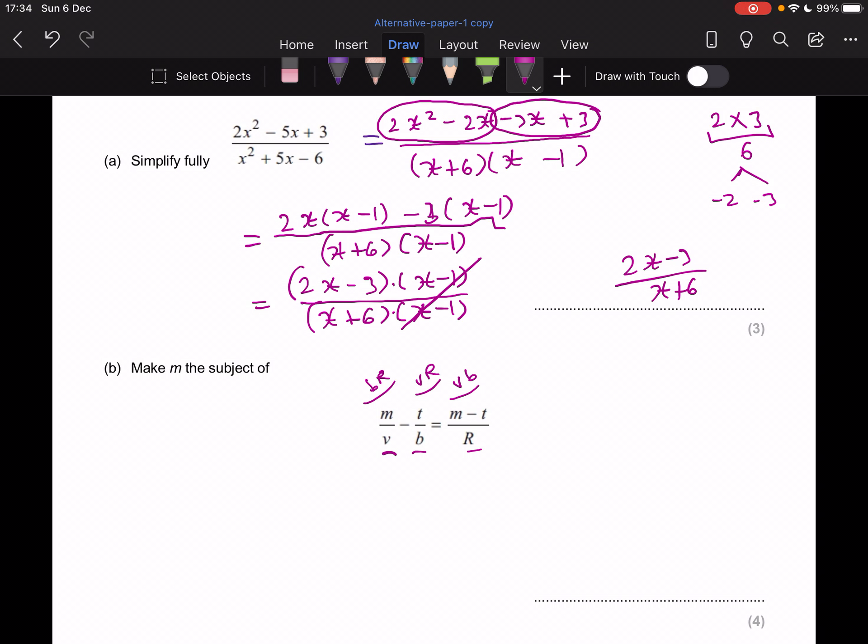So for the first one, I'm going to have BMR minus VTR over VBR. And that equals to, in this case, I have to put these in a bracket because there's two terms that need to be multiplied by VB. So VB bracket (M minus T), everything over VBR.